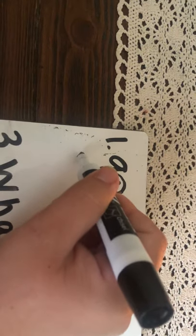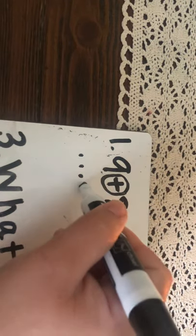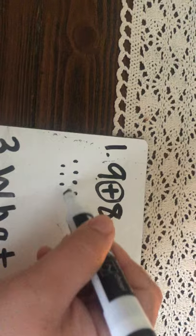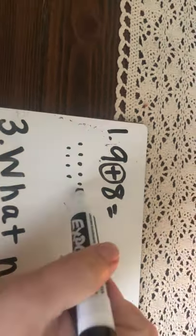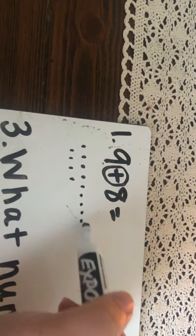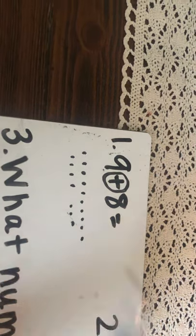So I'm going to draw my picture to represent that. One, two, three, four, five, six, seven, eight, nine. And I'm going to add eight to it. I'm not taking eight away. I'm adding eight more. One, two, three, four, five, six, seven, eight. Okay.